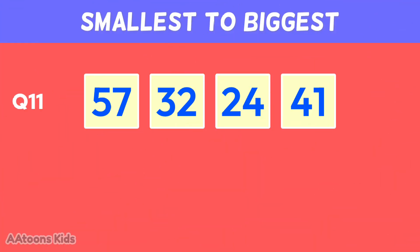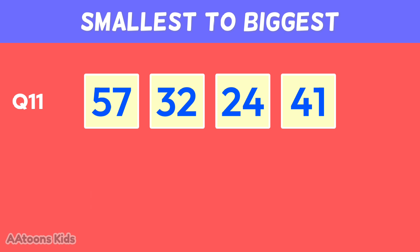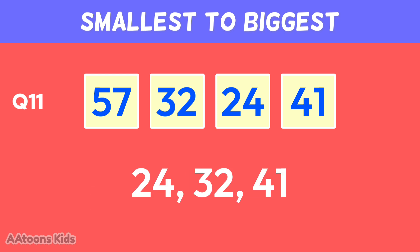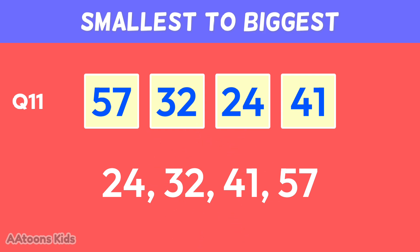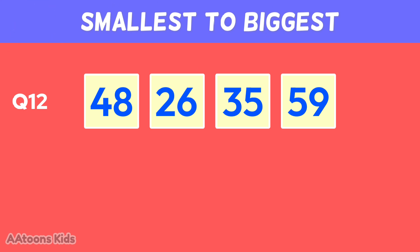Arrange these numbers from smallest to biggest: twenty-six, thirty-two, forty-one, fifty-seven.